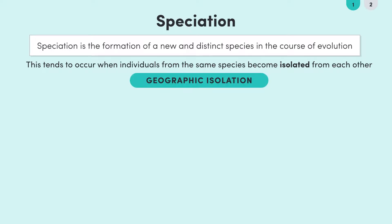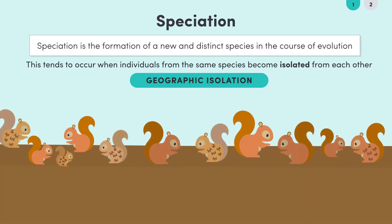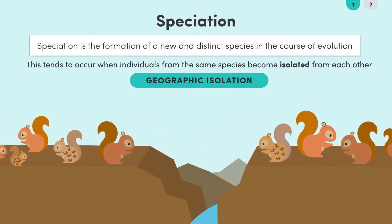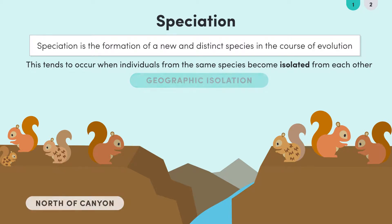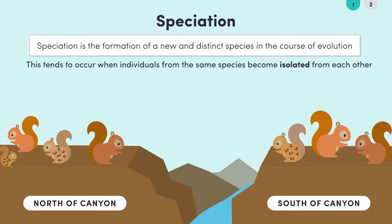That's geographic isolation. For example, when the Grand Canyon formed, it separated a population of squirrels into two. So now we've got a population of squirrels either side of the canyon — one on the north and one on the south. Individuals from these two populations are unable to breed with individuals from the other population.